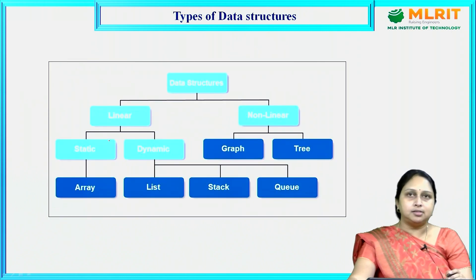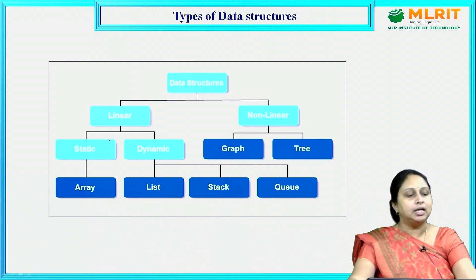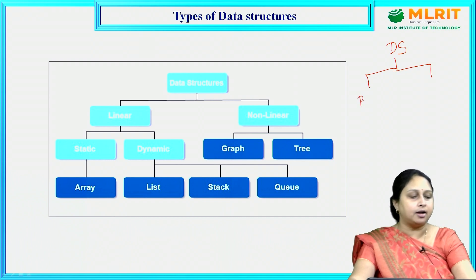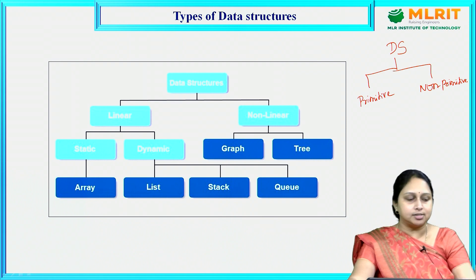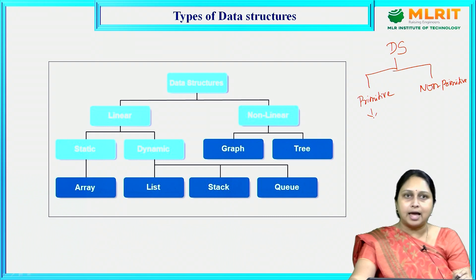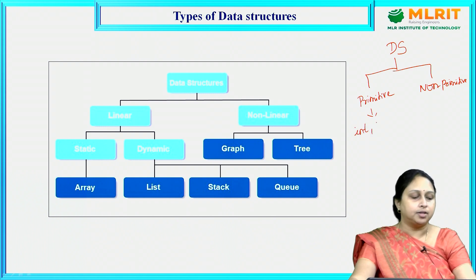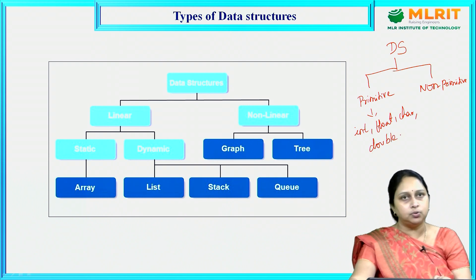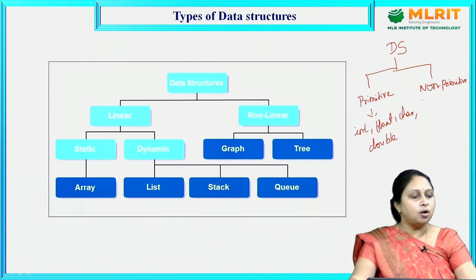Let us look at the classifications of data structures. Data structures are mainly classified into two types: one is primitive data structures and another is non-primitive data structures. Primitive data structures are the basic data types in C language — those are int, float, char, double, and so many other data types.